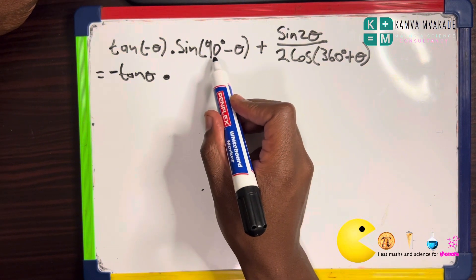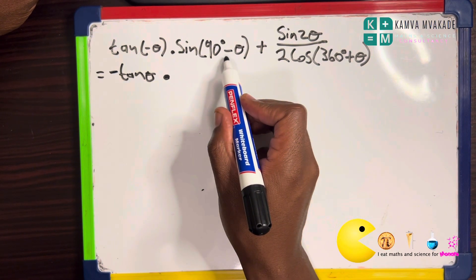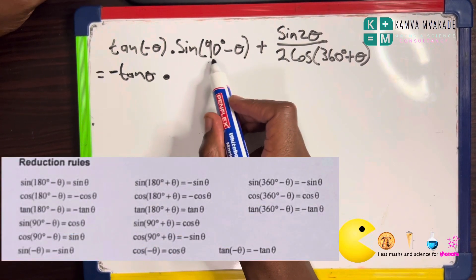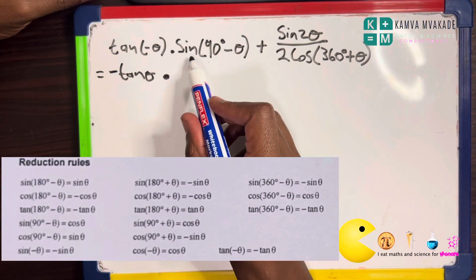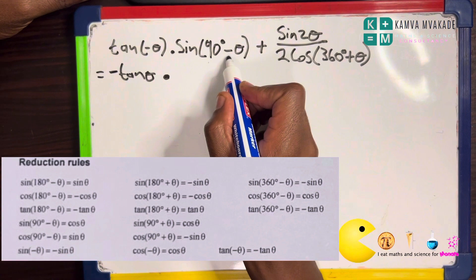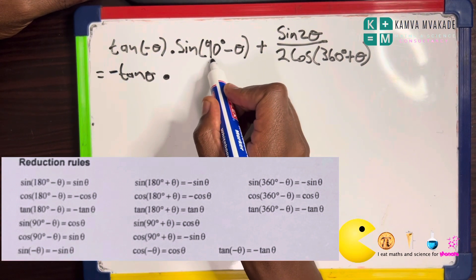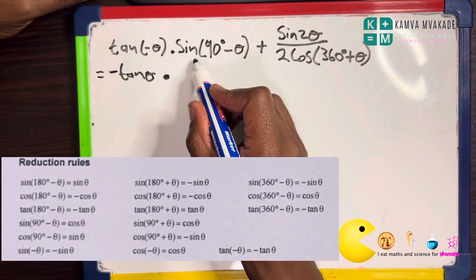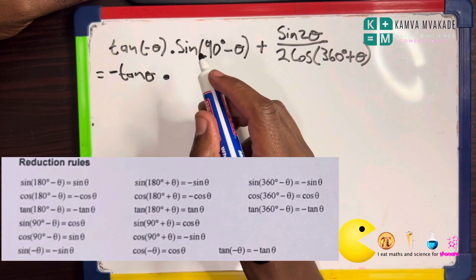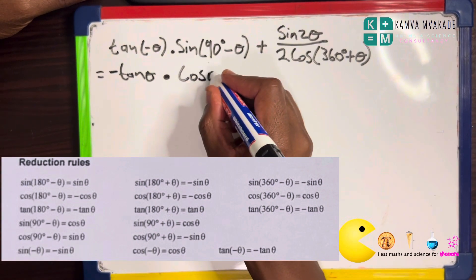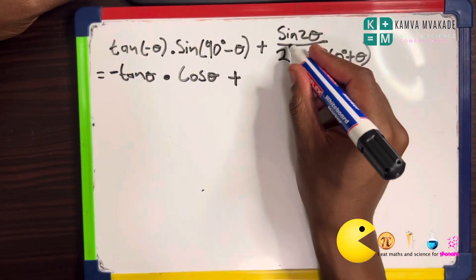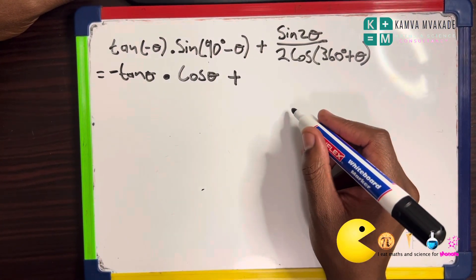When we have 90 minus or 90 plus, we apply the co-functions. The co-function of sine is cos. Since (90 minus theta) is in quadrant one, sine is positive and we change it to cos theta. So we now have negative tan theta multiplied by cos theta, plus the double angle of sine.